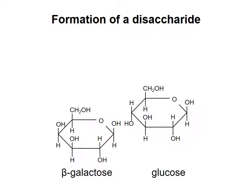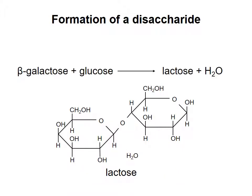Now that you know all about how monosaccharides can form ring structures, we can discuss how two monosaccharides can be joined together to form a disaccharide. Joining of monosaccharide units occurs via a condensation reaction in which the atoms of water are removed. For example, when the hydroxyl on carbon-1 of beta-galactose reacts with the hydroxyl of carbon-4 of glucose, two hydrogens and an oxygen are lost and the disaccharide lactose is formed.